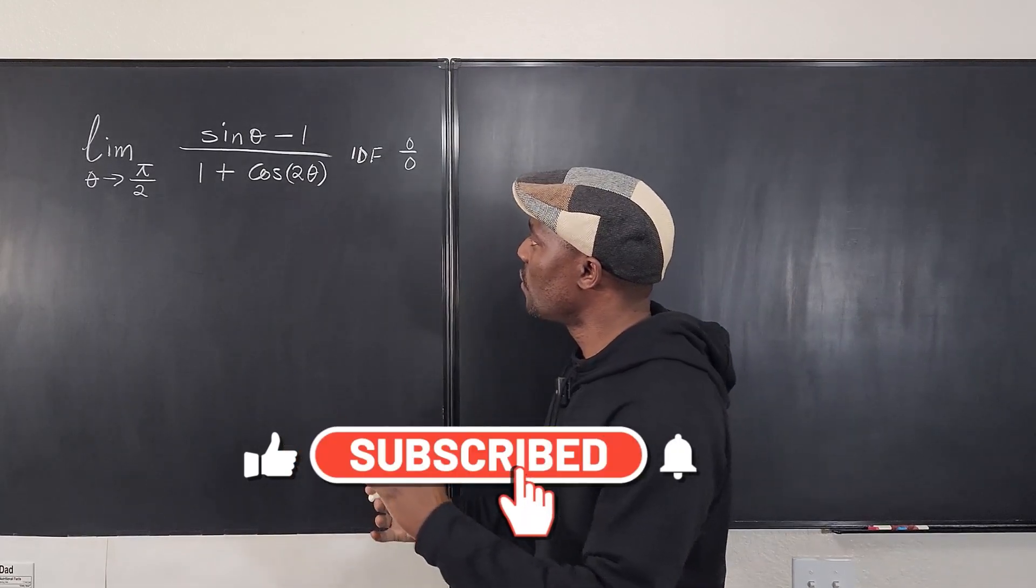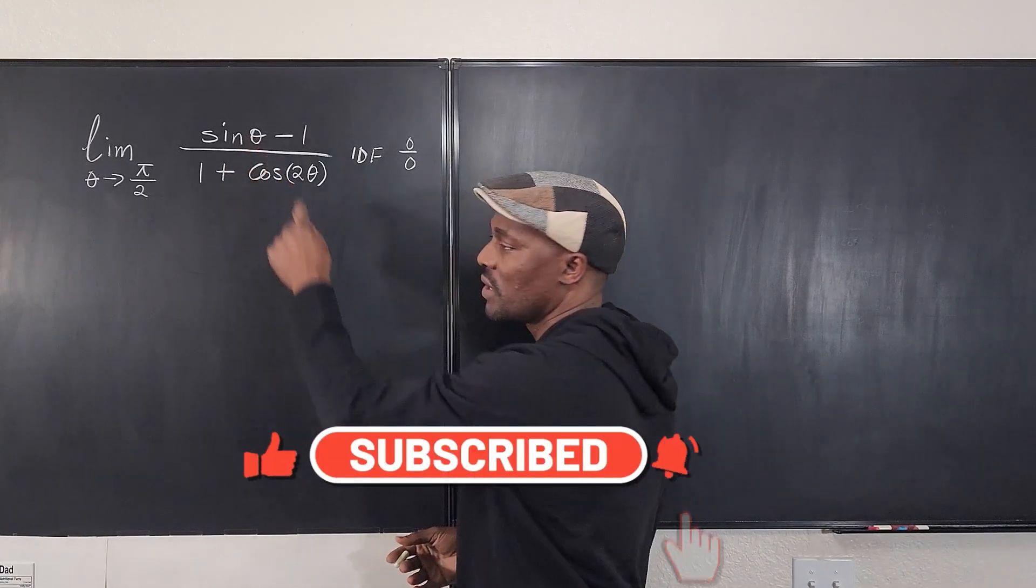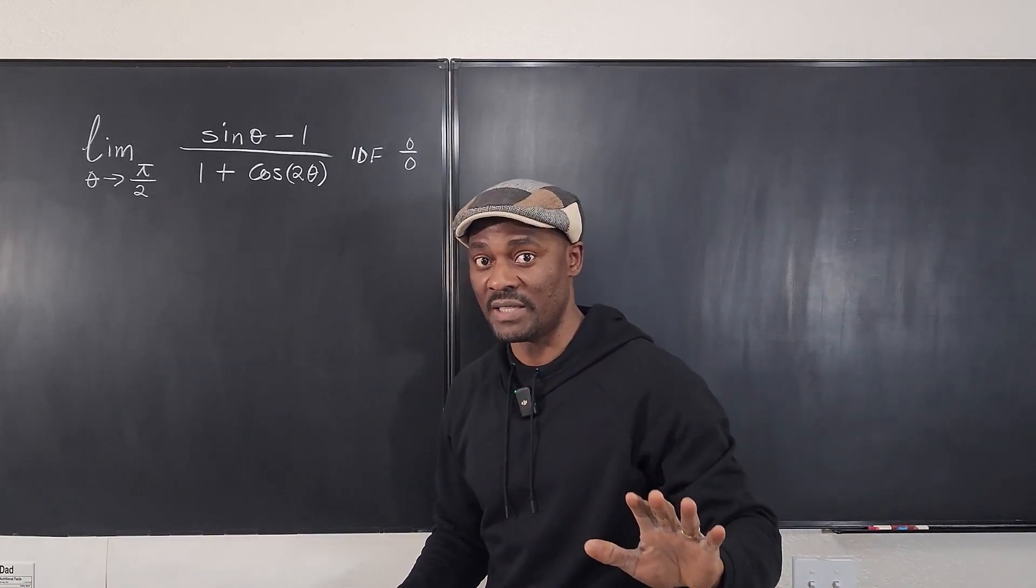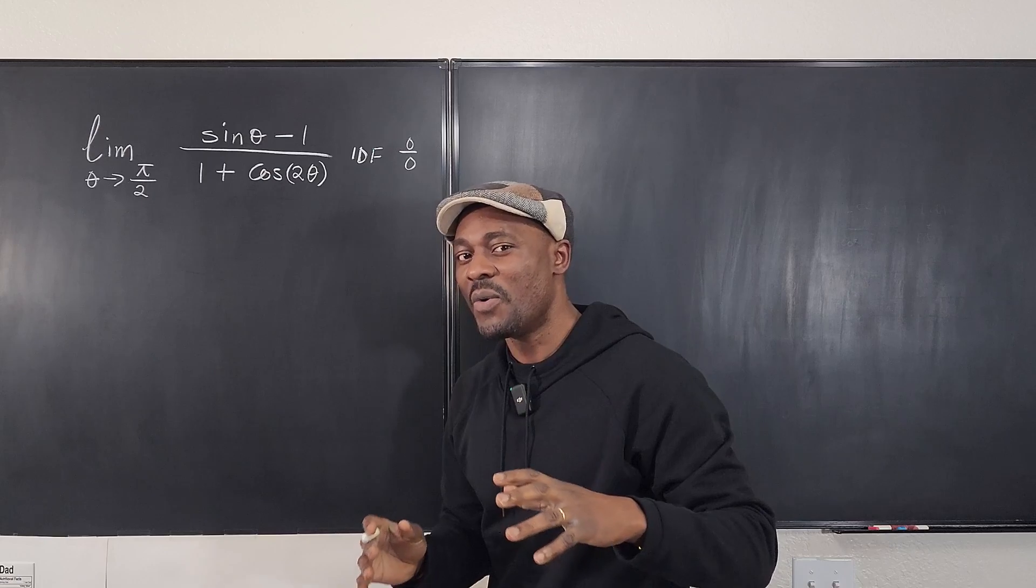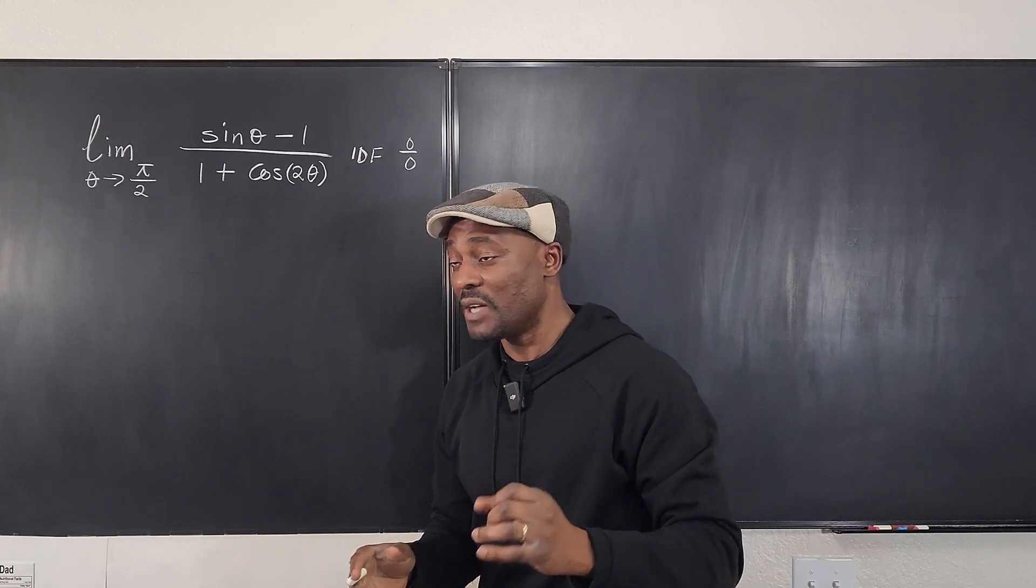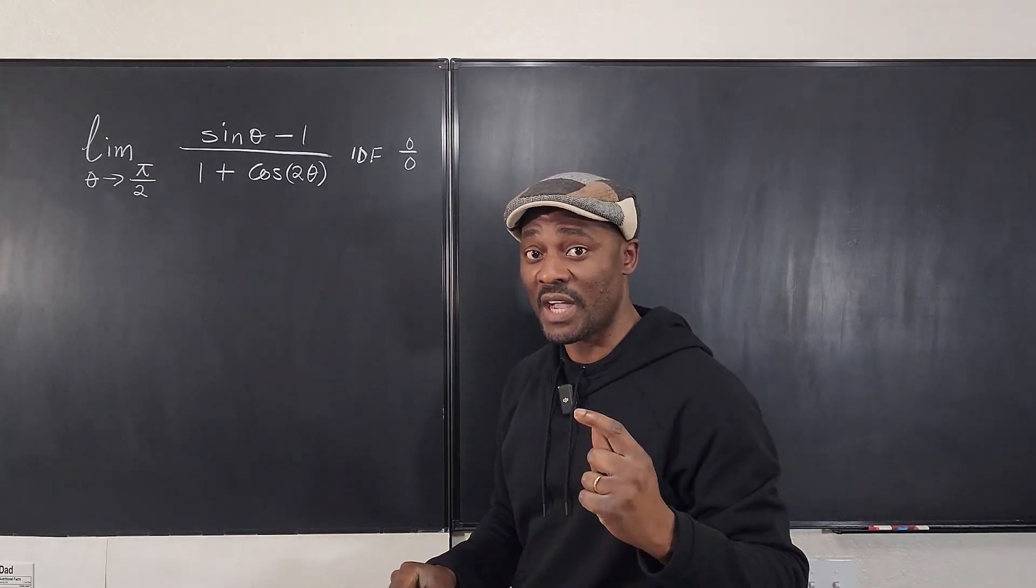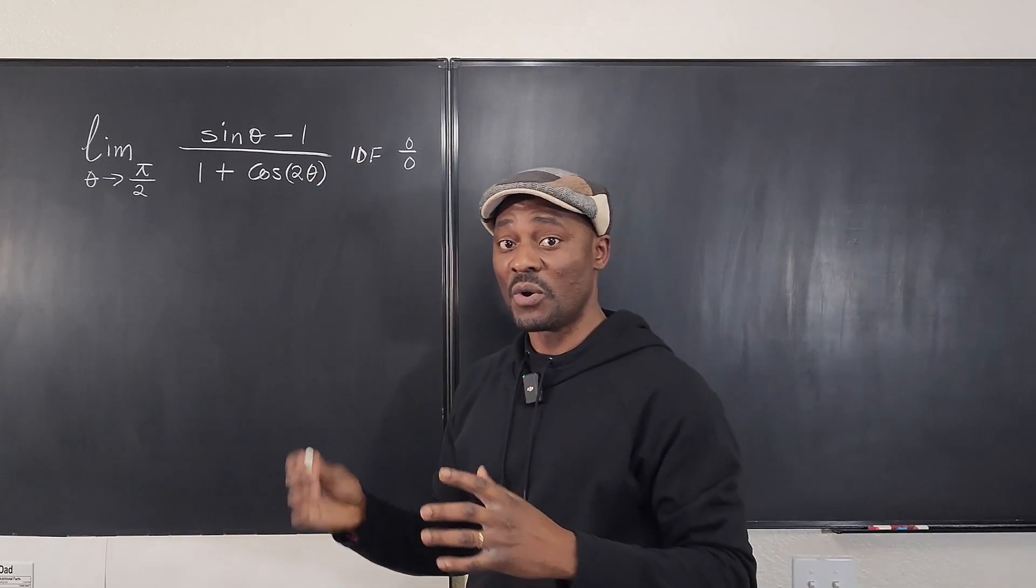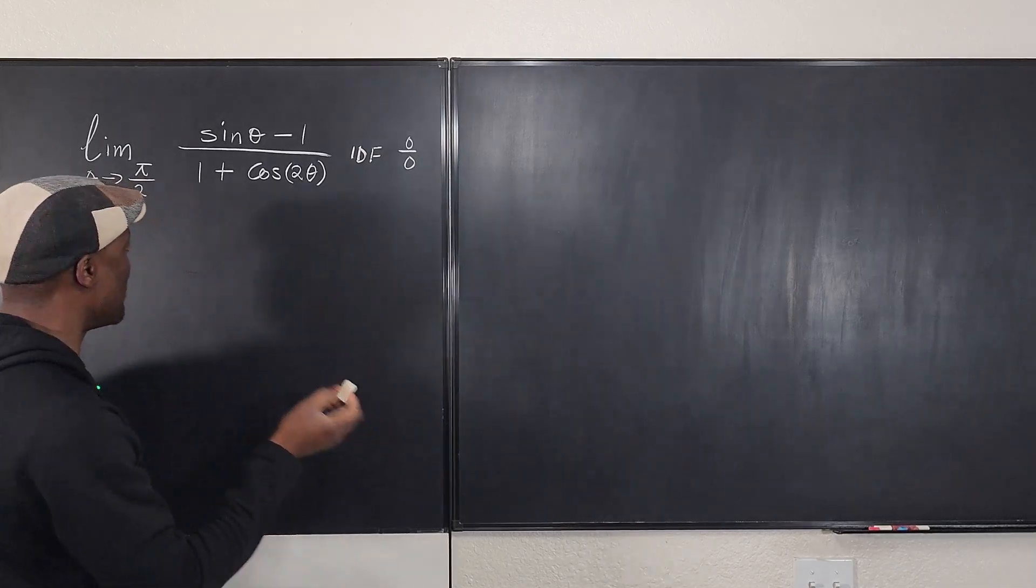Well, you want to look for a connection between this and what's on top. And I know that cosine 2θ can be written in three different ways. This you need to know as a calculus student. You must know the three ways you can write cos(2θ) because it's obtained from the angle sum formula for cosine, or the double angle formula.